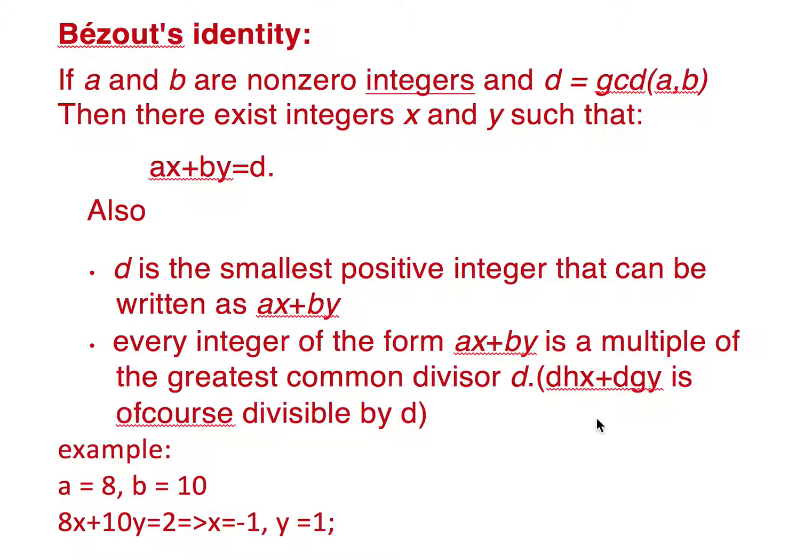So ax plus by becomes dhx plus dgy, and we can take d common out of this and it becomes d multiplied by hx plus gy, which is of course divisible by d. So we take an example below.